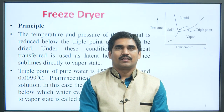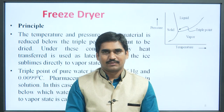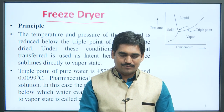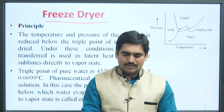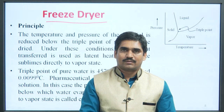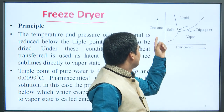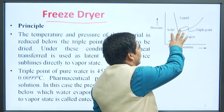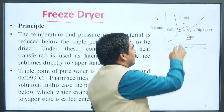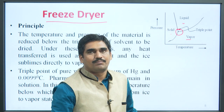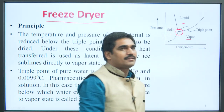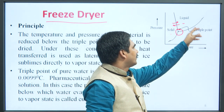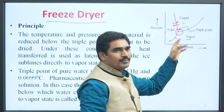The next drying equipment we will study is the freeze dryer. First, the principle of freeze dryer: as you see in the diagram, a graph is plotted between pressure and temperature. Three different states of matter are shown — solid, liquid, and vapour. There is a point called the triple point, at which all three phases exist in equilibrium. Here, solid and liquid phase are in equilibrium, and liquid and vapour phase are also in equilibrium.